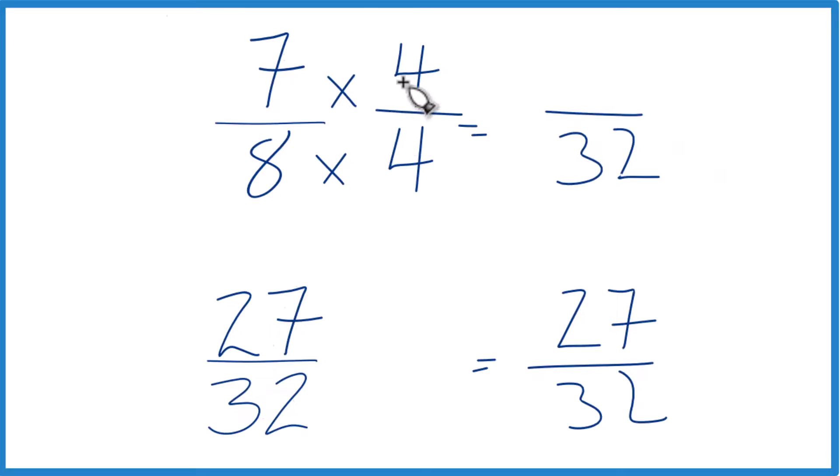7 times 4 is 28. Same denominator, compare the numerators. 28 is larger than 27, 28 32nds is larger than 27 32nds, only by 1 32nd, so not a lot, but it's still larger.